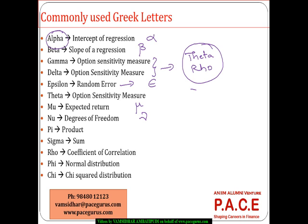We also use a letter called vega, which is also an option sensitivity measure. The pi - when we are talking about a capital pi, it is typically used as a multiplier. A multiplication of few values we denote it by the capital letter pi, whereas the small letter pi is a clear indication of a constant which is 22 by 7. Similarly sigma - we have a capital sigma which denotes summation, a small sigma.